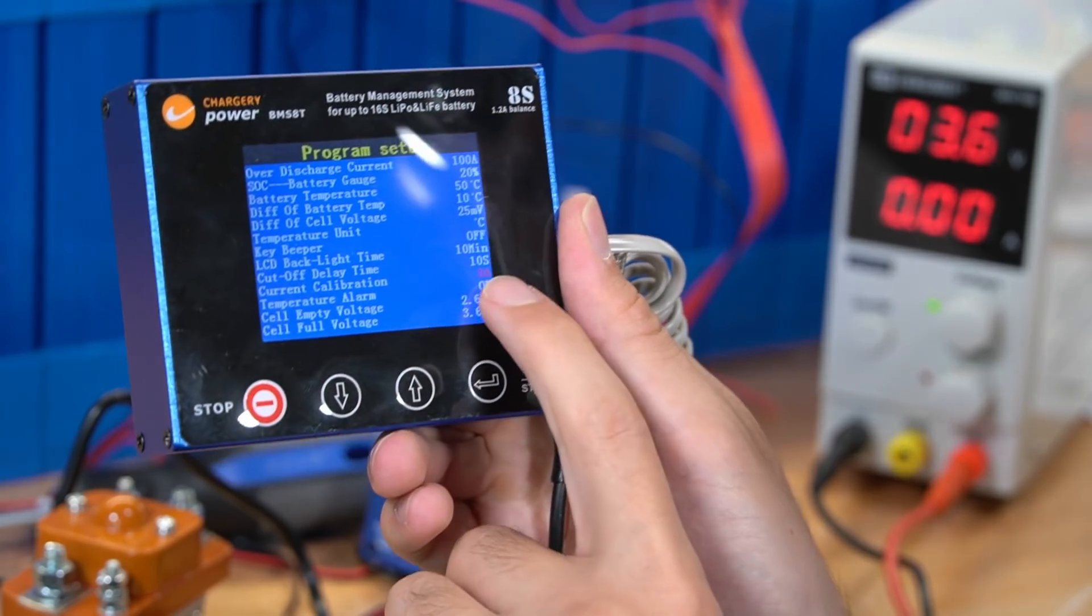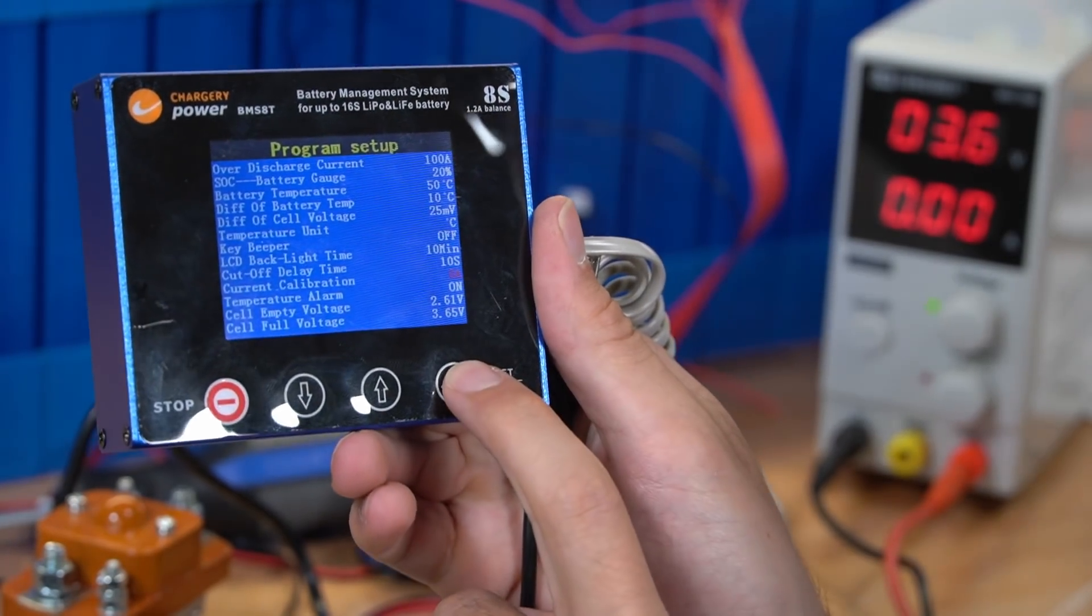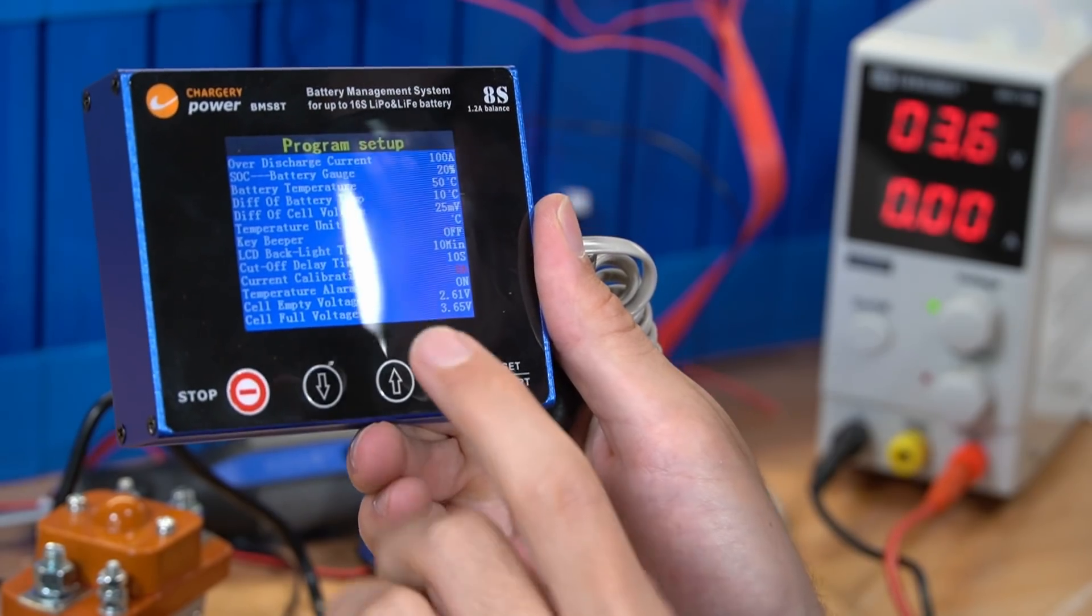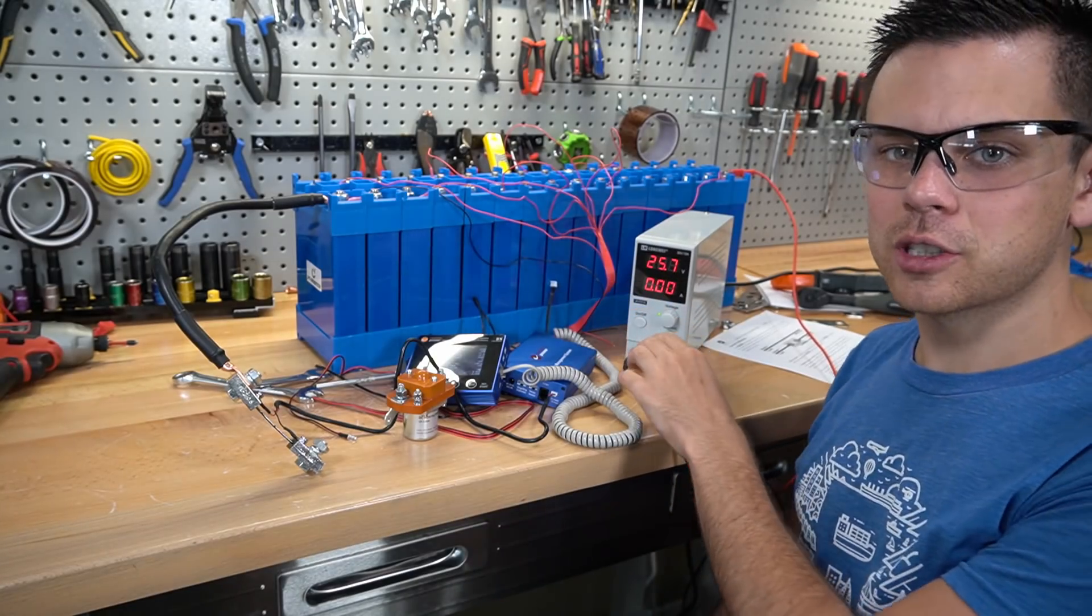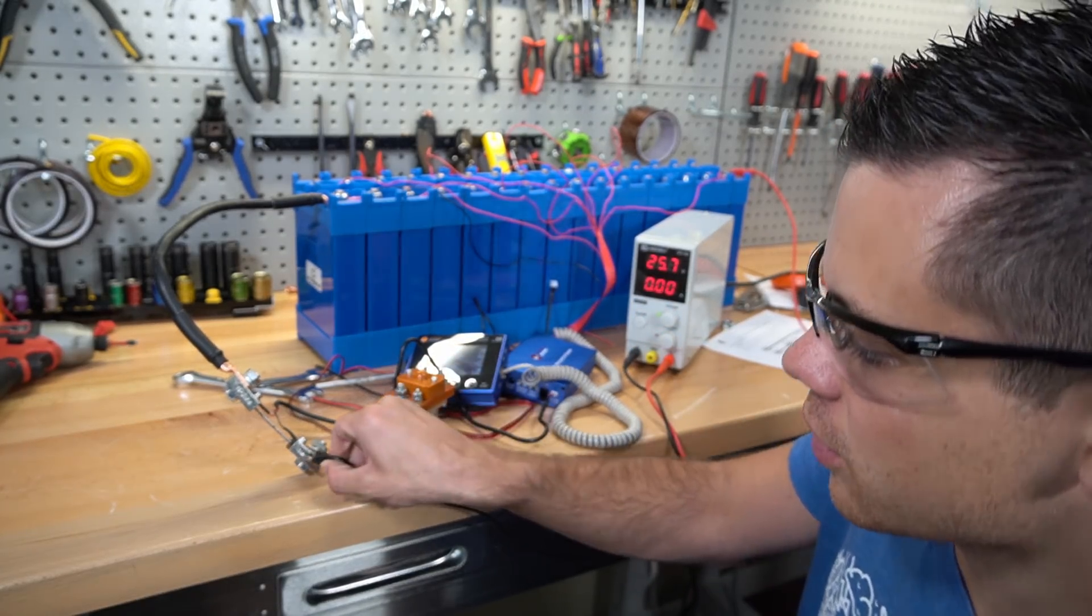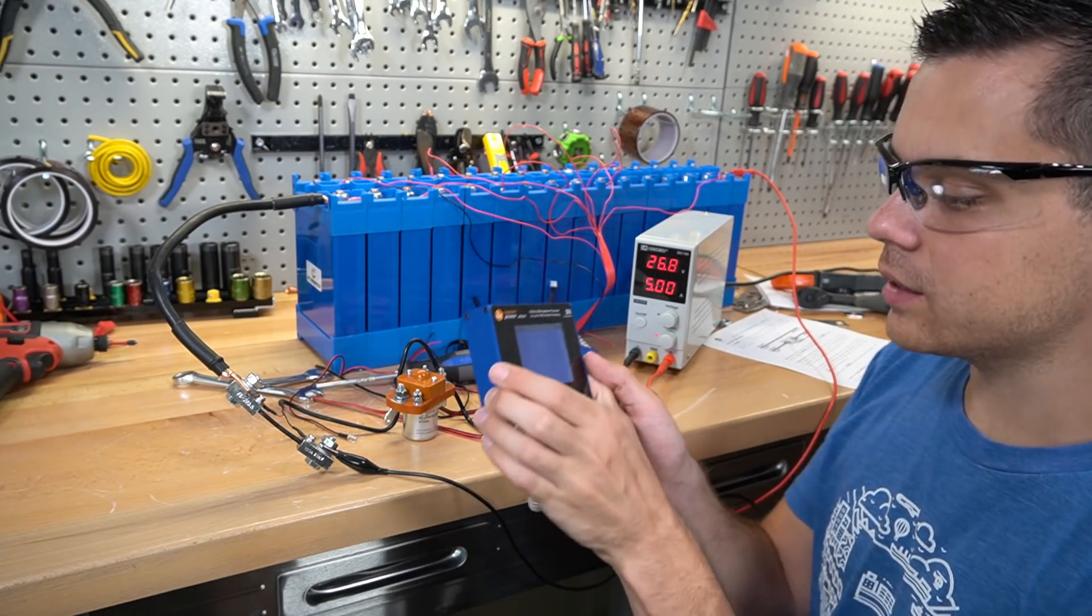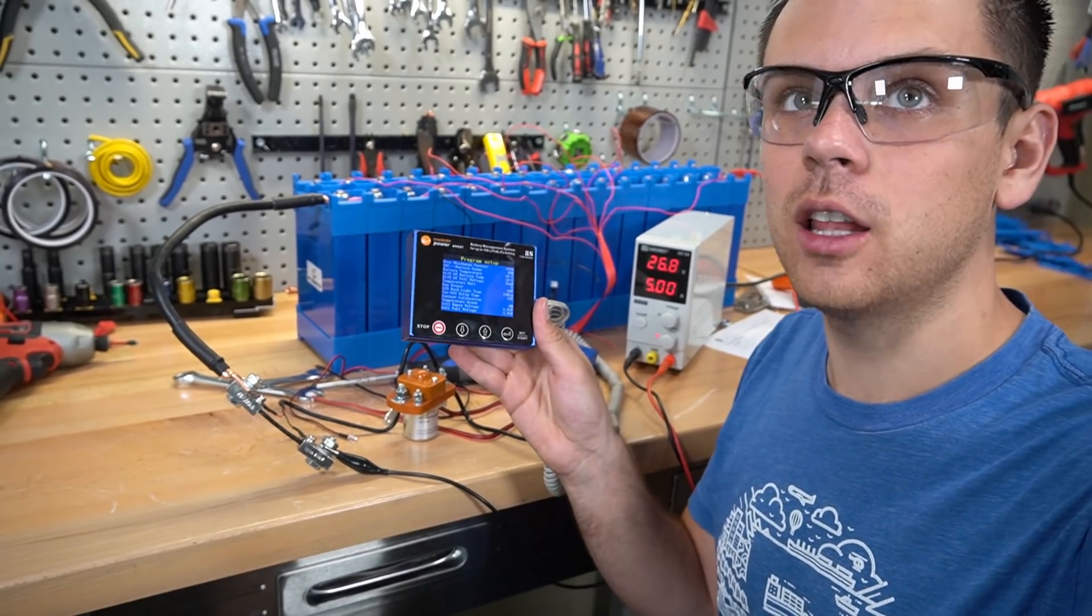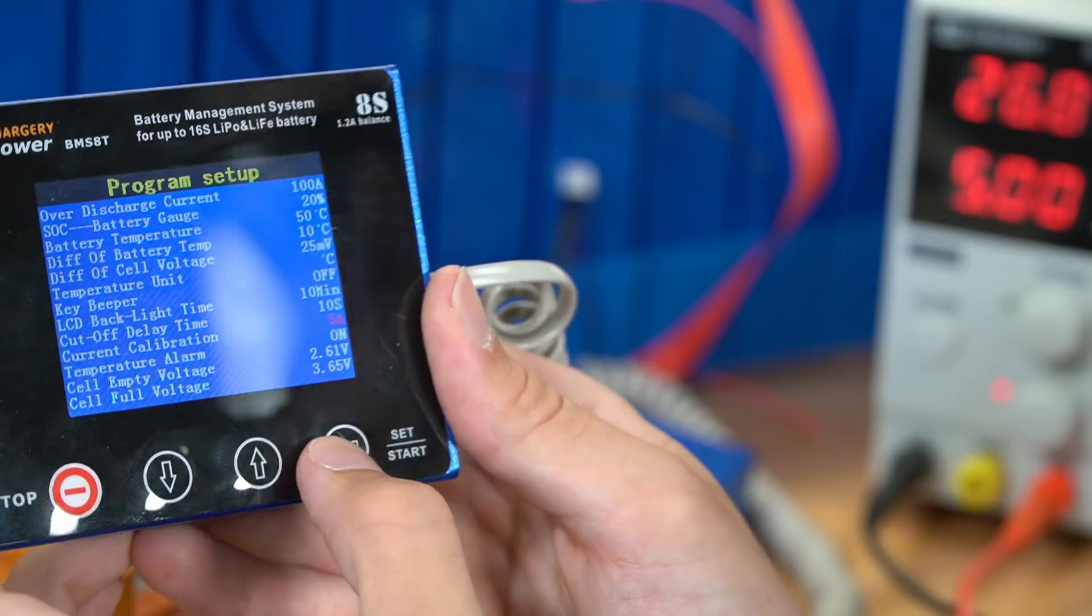First we're going to go to the current calibration setting under the menu. It shows zero amps. I need to press this once, go up and down, make sure that the first time it's flashing it's at zero. Then we want to press enter and press enter again. We need to give it a charge current that's like five amps. We're going to boost the power supply up to 25 volts and connect our charger to the shunt. Now I'm going to set it to five amps and while it's still flashing we need to go in here and put five amps in so it can calibrate. Then press enter.